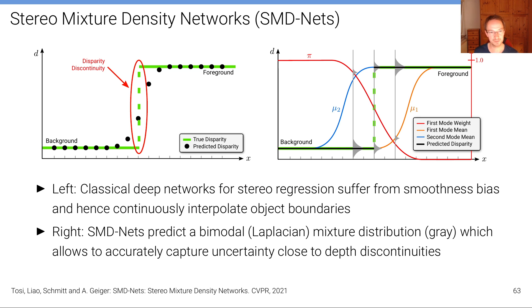And so these are the results of the SMD-Nets, the Stereo Mixture Density Networks that predict sharper boundaries and also at much higher spatial resolution. And how is this done? Well the first innovation here is that instead of predicting just a single or regressing a single disparity value we're predicting a multi-modal distribution over disparity values and the advantage of this is that with this we can model much sharper disparity discontinuities.